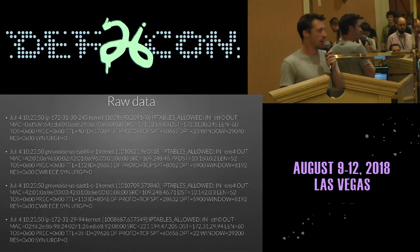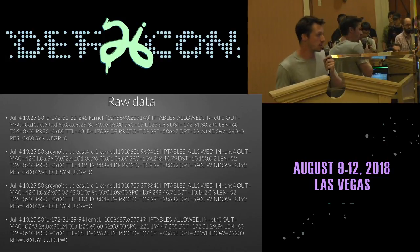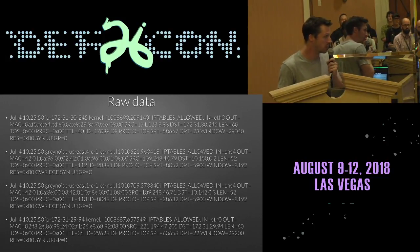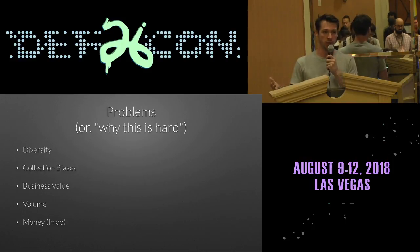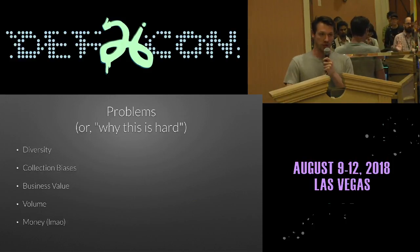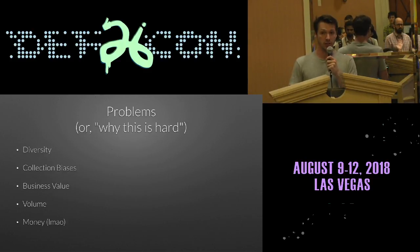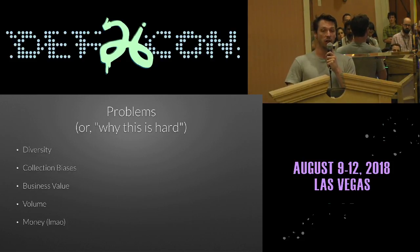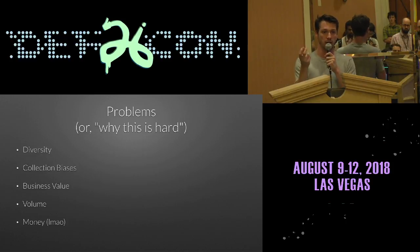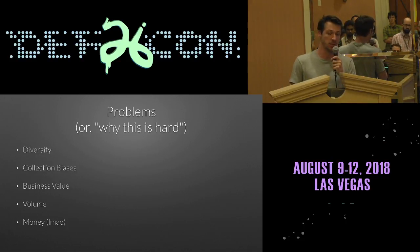This is what the raw data looks like — these are just iptables logs ripped straight out from GreyNoise. Why is what we're doing challenging? You need to have a very diverse set of data in a lot of different places, and you need to make sure the anomalies you're measuring are justifiable in equal amounts of observation points — you have to avoid collection biases. If you have one optic in one place seeing crazy stuff, that's not an internet-wide anomaly. You need to correlate it across many different kinds of networks.